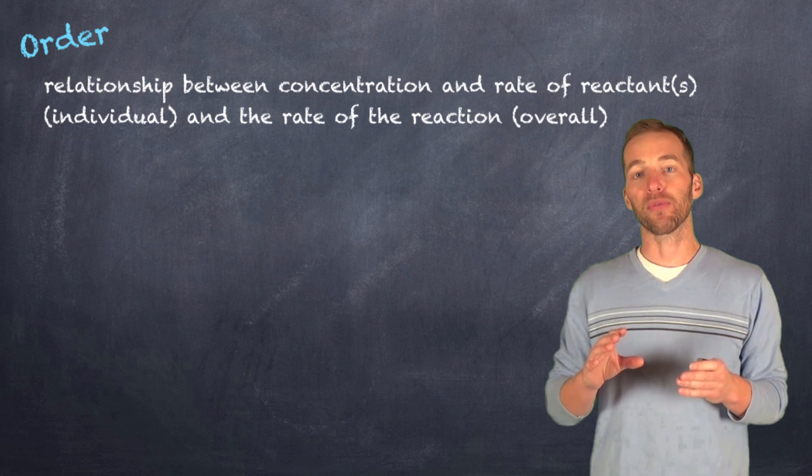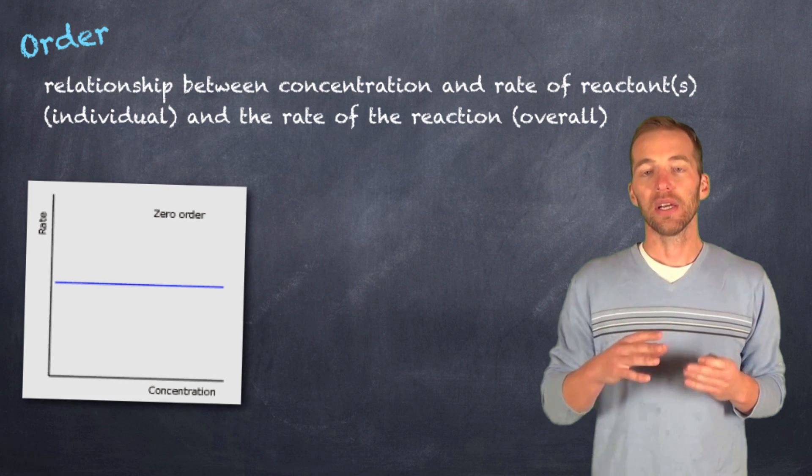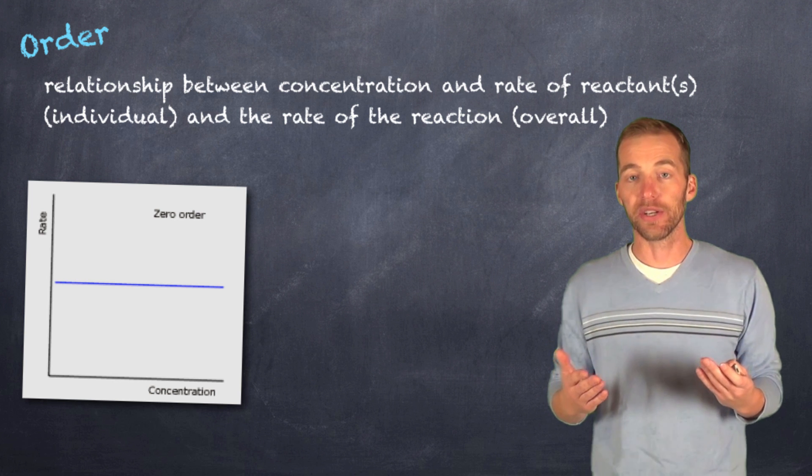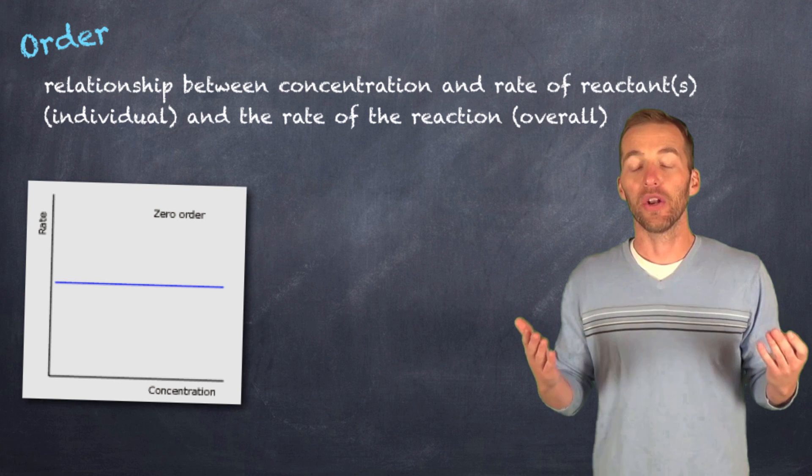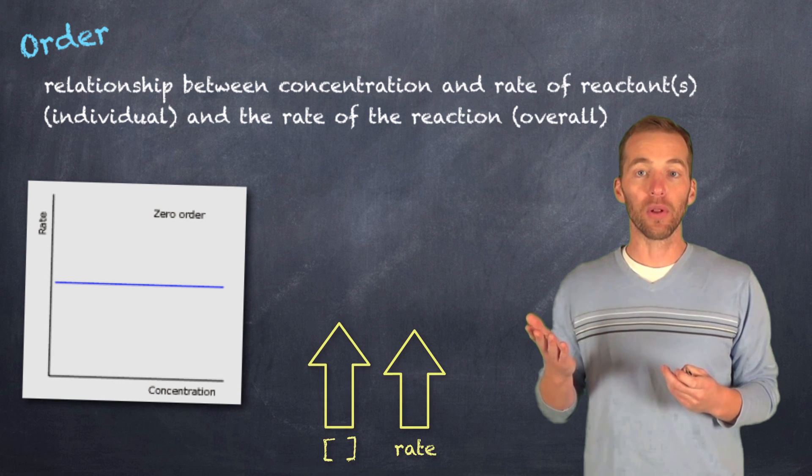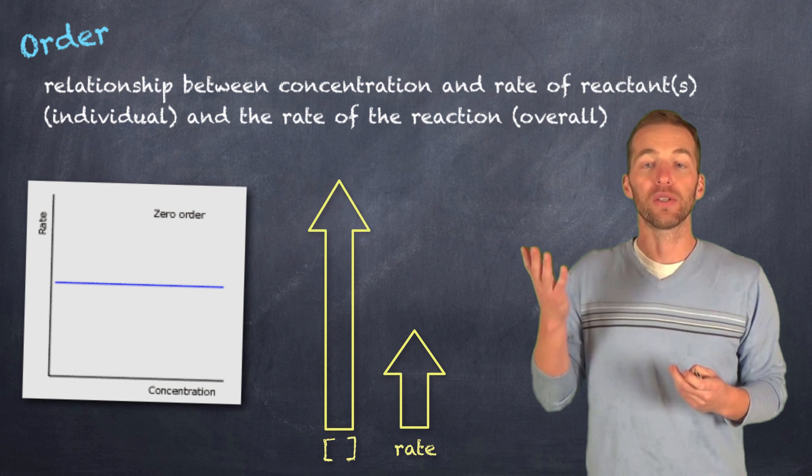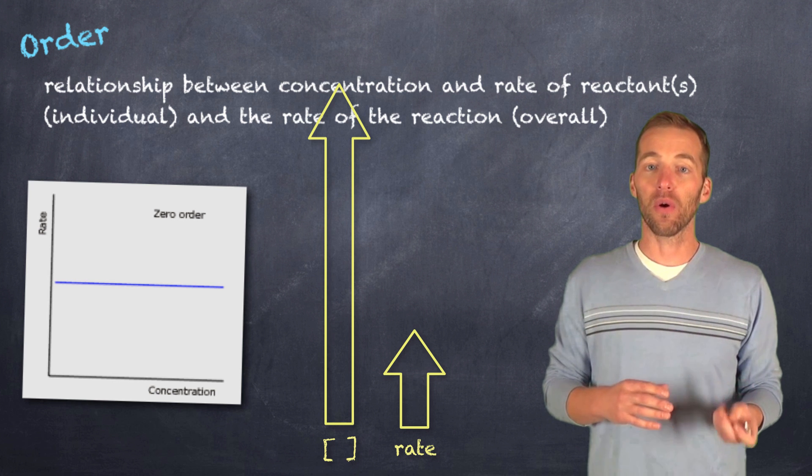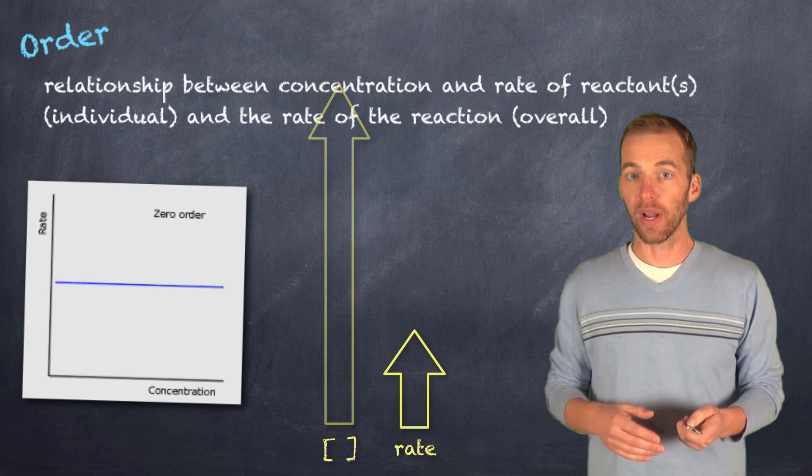If we have something that we refer to as zero order, zero order means that the concentration or a change in concentration is going to have effectively no change in the rate of the reaction. So even if we were to double or triple or quadruple the overall concentration of that particular reactant, if it's zero order, it's not going to have any effect on rate.